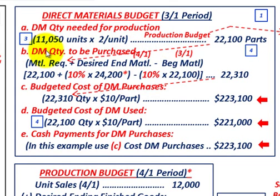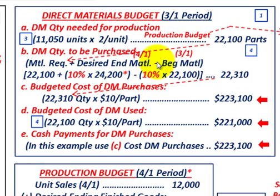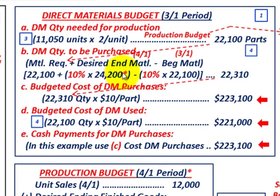For step two, the direct material quantity to be purchased: we start with the quantity needed for production — 22,100 parts — then add the desired ending material inventory and subtract the beginning material inventory. The desired ending material inventory is based on 10% of the next month's (April's) production amount, which we need to calculate as 24,200 parts.